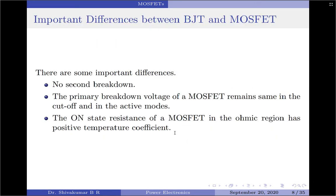At this point, the similarity of the output characteristics of a MOSFET with that of a BJT should be apparent. Both have three distinct modes of operation: cut-off, active, and ohmic (or saturation for BJT). However, there are some important differences. Unlike a BJT, a MOSFET does not undergo secondary breakdown. The primary breakdown voltage of a MOSFET remains the same in both the cut-off and active modes, which should be contrasted with the three different breakdown voltages for a BJT: VSUS, VCEO, and VCBO.